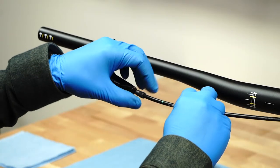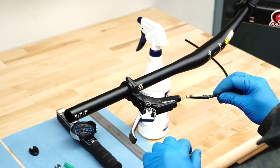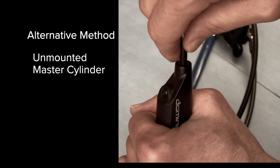With one hand, firmly grasp the hose close to the master cylinder and hold the master cylinder with the other hand. Rock the hose side to side until it snaps free.